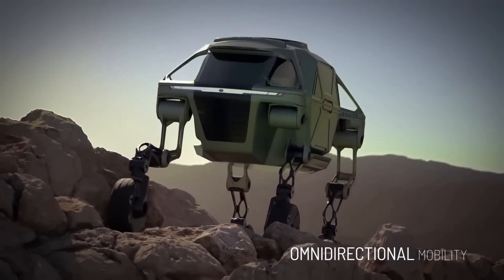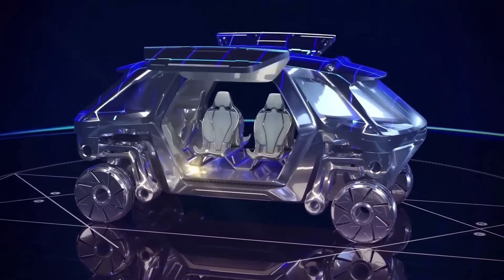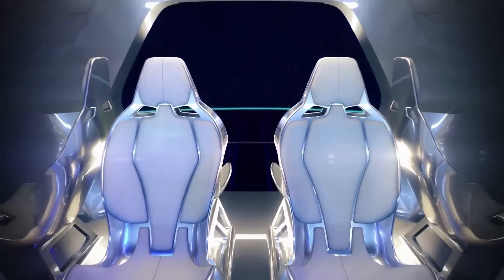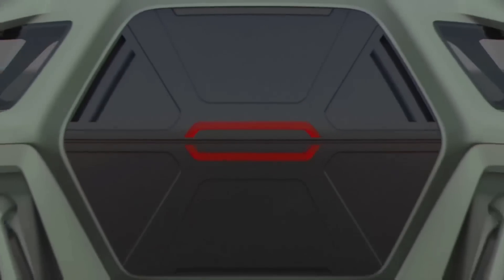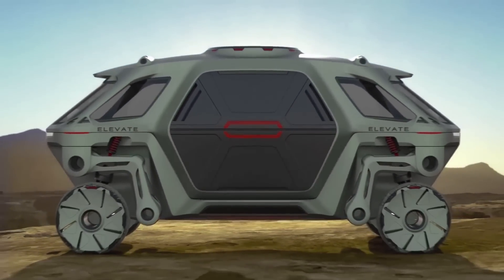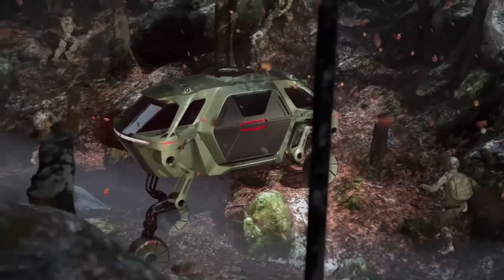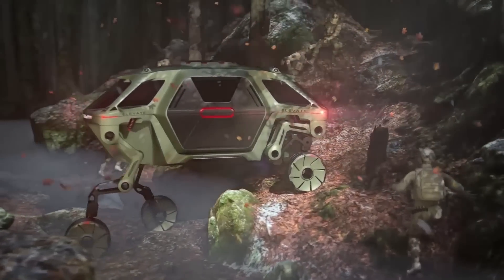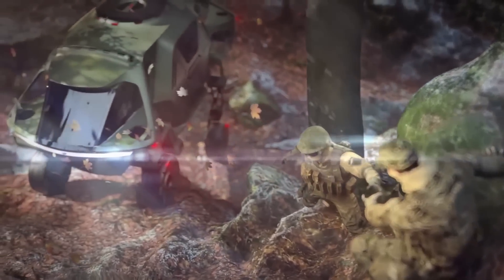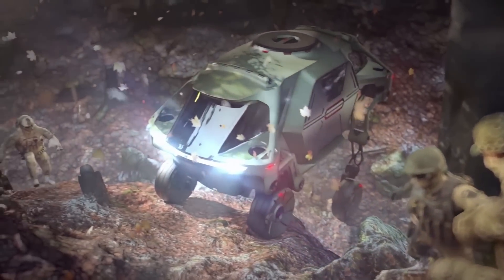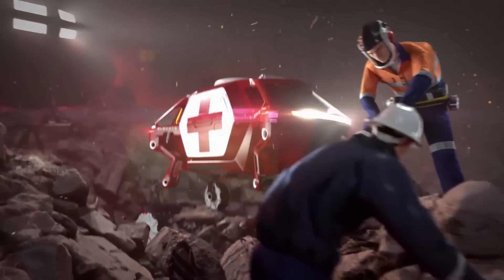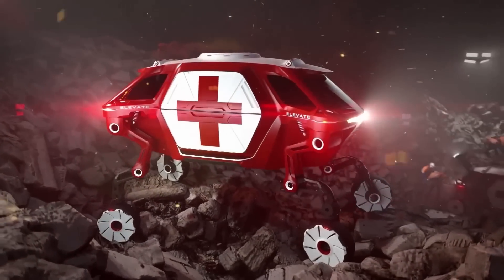The Elevate's standout feature is that its four wheels are attached to four robotic legs. According to Hyundai, this has numerous real-world applications. Hyundai envisions that an Elevate-style vehicle could help first responders traverse harsh terrain after natural disasters or pick up wheelchair users who don't have access to an ADA ramp right at their doorstep.